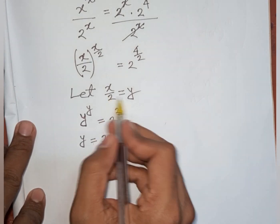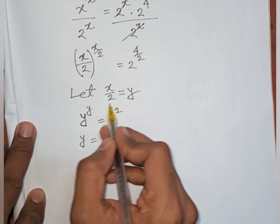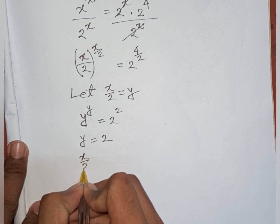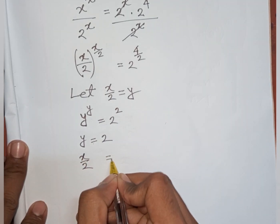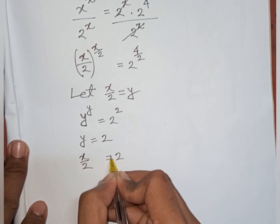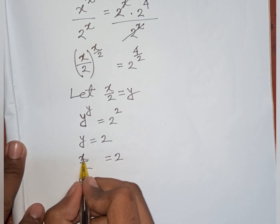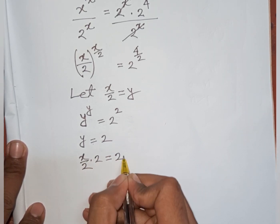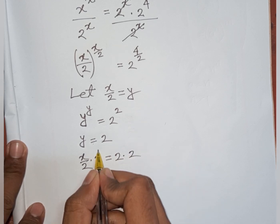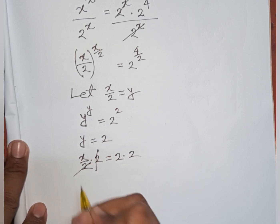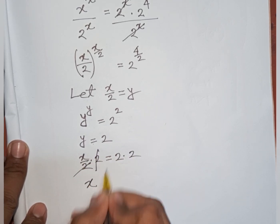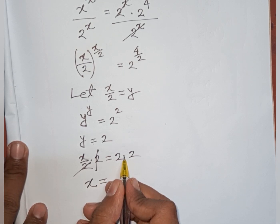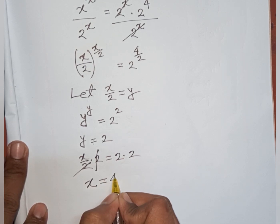Remember that x over 2 was substituted by y, so x over 2 equals 2. To find x, we multiply both sides by 2, so x equals 2 times 2, which equals 4.